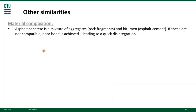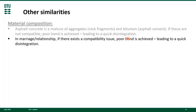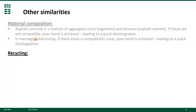There are many other similarities between asphalt pavements and humans. For example, material composition: asphalt concrete is a mixture of aggregates and bitumen. If these are not compatible, poor bond is achieved, leading to a quick disintegration of the mix. In a marriage relationship, if there exists a compatibility issue, poor bond is achieved between the pair, leading to a quick disintegration of the relationship.